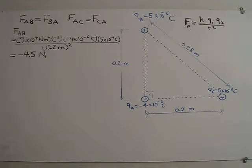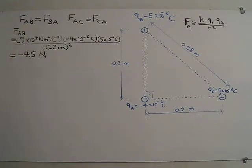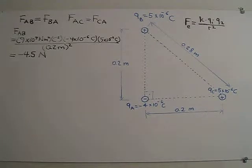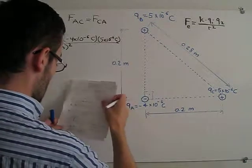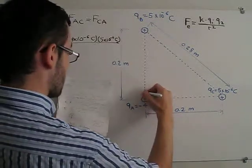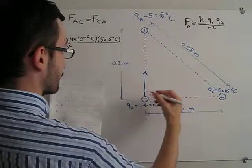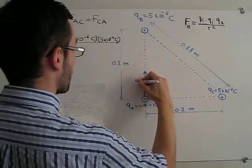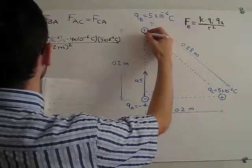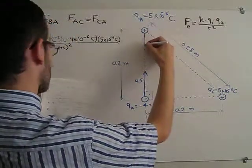So let us show FAB on the diagram. FAB, the force on A by B, will be 4.5 Newtons as shown, and FBA will also be equal in magnitude but opposite in direction.